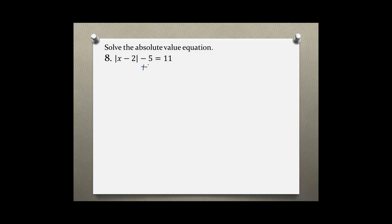Let's start by moving the 5 to the other side. We are left with the absolute value of x minus 2 is equal to 16. So we isolated the absolute value bar and this is a positive number, so we could get an absolute value solution for this.